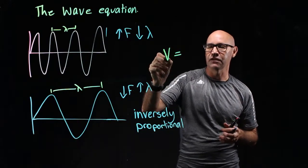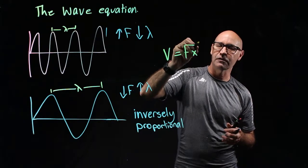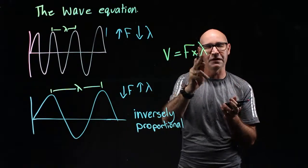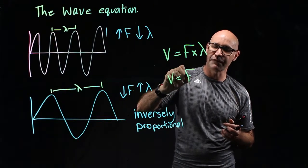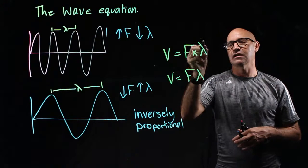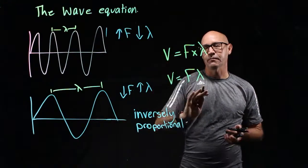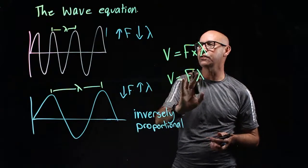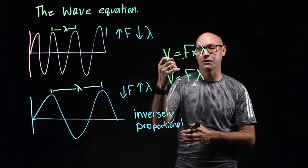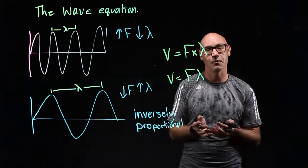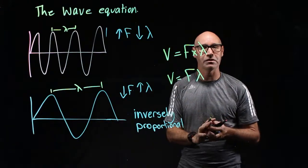And the wave equation is speed equals frequency times wavelength. Or to simplify it, we get rid of the times and just say V equals F lambda. And of course, lambda is wavelength. So that's the wave equation. And we can use it to find out if we know two of these things. If we know speed and we know frequency, then we can work out wavelength. Or if we know wavelength and speed, then we can work out frequency.